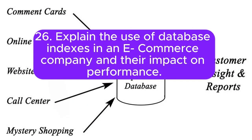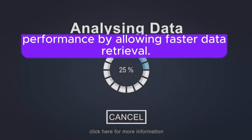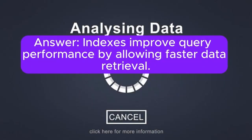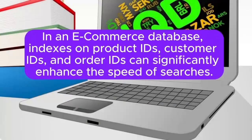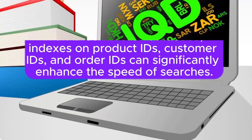Question 26: Explain the use of database indexes in an e-commerce company and their impact on performance. Indexes improve query performance by allowing faster data retrieval. In an e-commerce database, indexes on product IDs, customer IDs, and order IDs can significantly enhance the speed of searches.